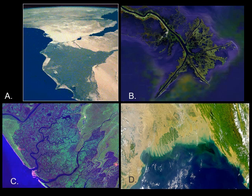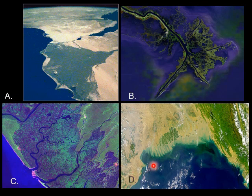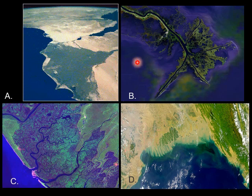These are the satellite images of the deltas. A is the Nile delta, B is the Mississippi River delta, C is the Rhone delta, and the last photo is the Ganges delta. The types are based on dominant processes — for example, in a river-dominated delta, fluvial processes are the main process that shapes the delta. You can see the different morphology of deltas in different settings because of the dominant process that shapes them.